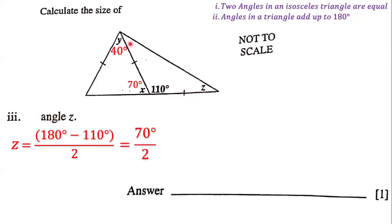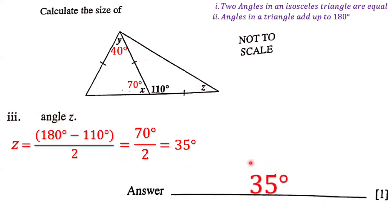Because we have two equal angles here, we have to split the 70 degrees into two equal halves so that each angle gets an equal amount. So we have 70 divided by 2, and 70 divided by 2 is 35. Therefore angle Z is equal to 35 degrees, because two angles in an isosceles triangle are equal and angles in a triangle add up to 180 degrees.